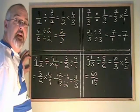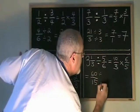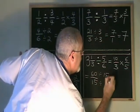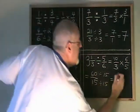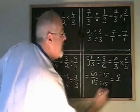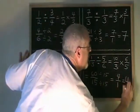60 and 15 have a common factor of 15. So I'm going to divide both top and bottom by 15. 60 divided by 15 is 4. 15 divided by 15 is 1. My final answer is 4 over 1, which is equal to 4.